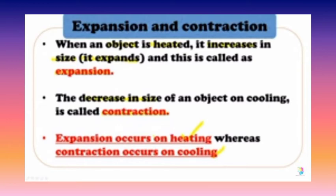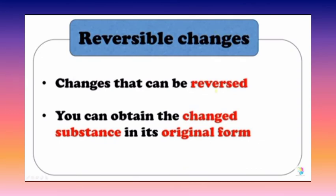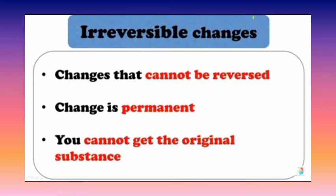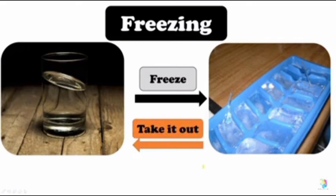Expansion occurs on heating, whereas contraction occurs on cooling. To recap: reversible changes are changes that can be reversed — if you want to reverse them, you can. Irreversible changes are permanent; you cannot convert the substance back to its previous form. For example, ice melts to water and can be frozen back to ice — this is a reversible change. Heat turns ice to water; freeze it and it returns to ice.